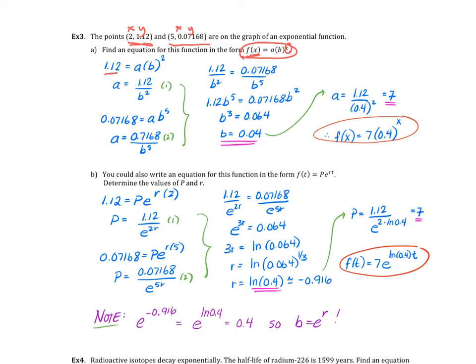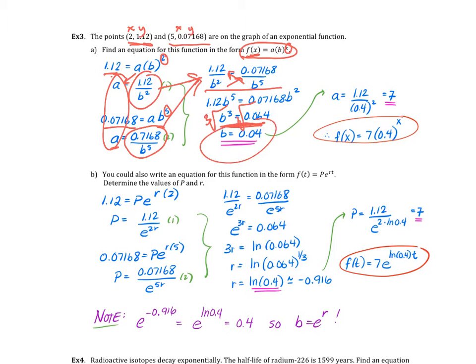So it's going to be my y value 1.12 equals a times b to the x value, then isolate and solve for a. We substitute in the other y value of 0.07168 and the other x value of 5, and again isolate a. We have a system of equations, we can set them equal to each other because they both equal a. So I set up a proportion where 1.12 over b squared equals 0.07168 over b to the fifth. I cross multiply to get 1.12 b to the fifth equals 0.07168 b squared. I divide each side to isolate my b, so I get b cubed equals 0.064. When I take the cube root of both sides I get 0.4.